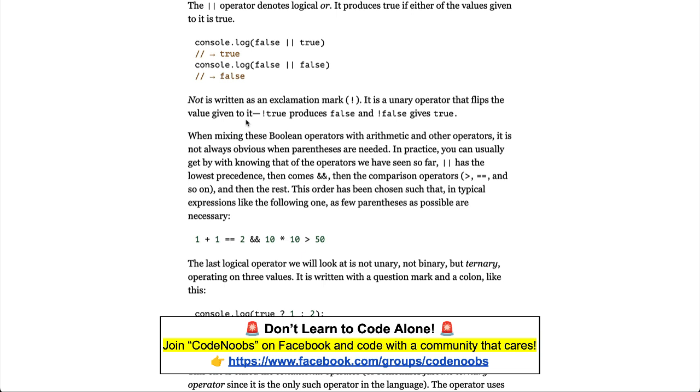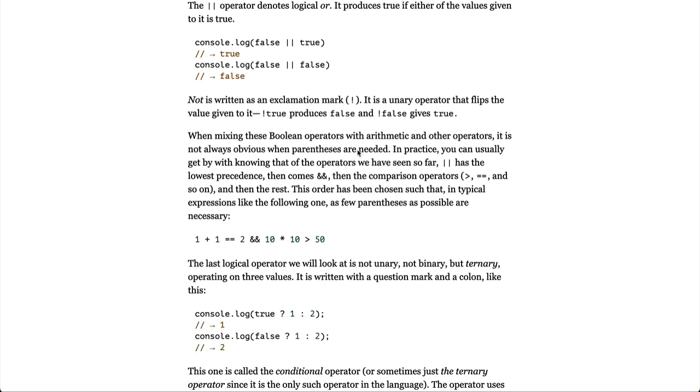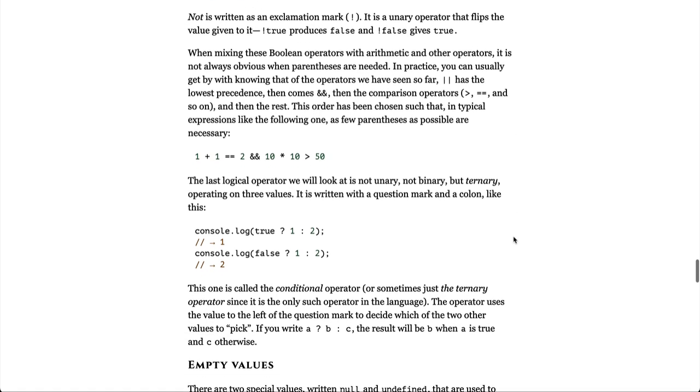When mixing these boolean operators with arithmetic and other operators, it is not always obvious when parentheses are needed. In practice, you can usually get by knowing that of the operators we have learned so far, pipe or or has the lowest precedence, then comes and, then the comparison operators, less than, equal to, and so on, and then the rest. This order has been chosen such that in typical expressions like the one that follows, as few parentheses as possible are necessary.